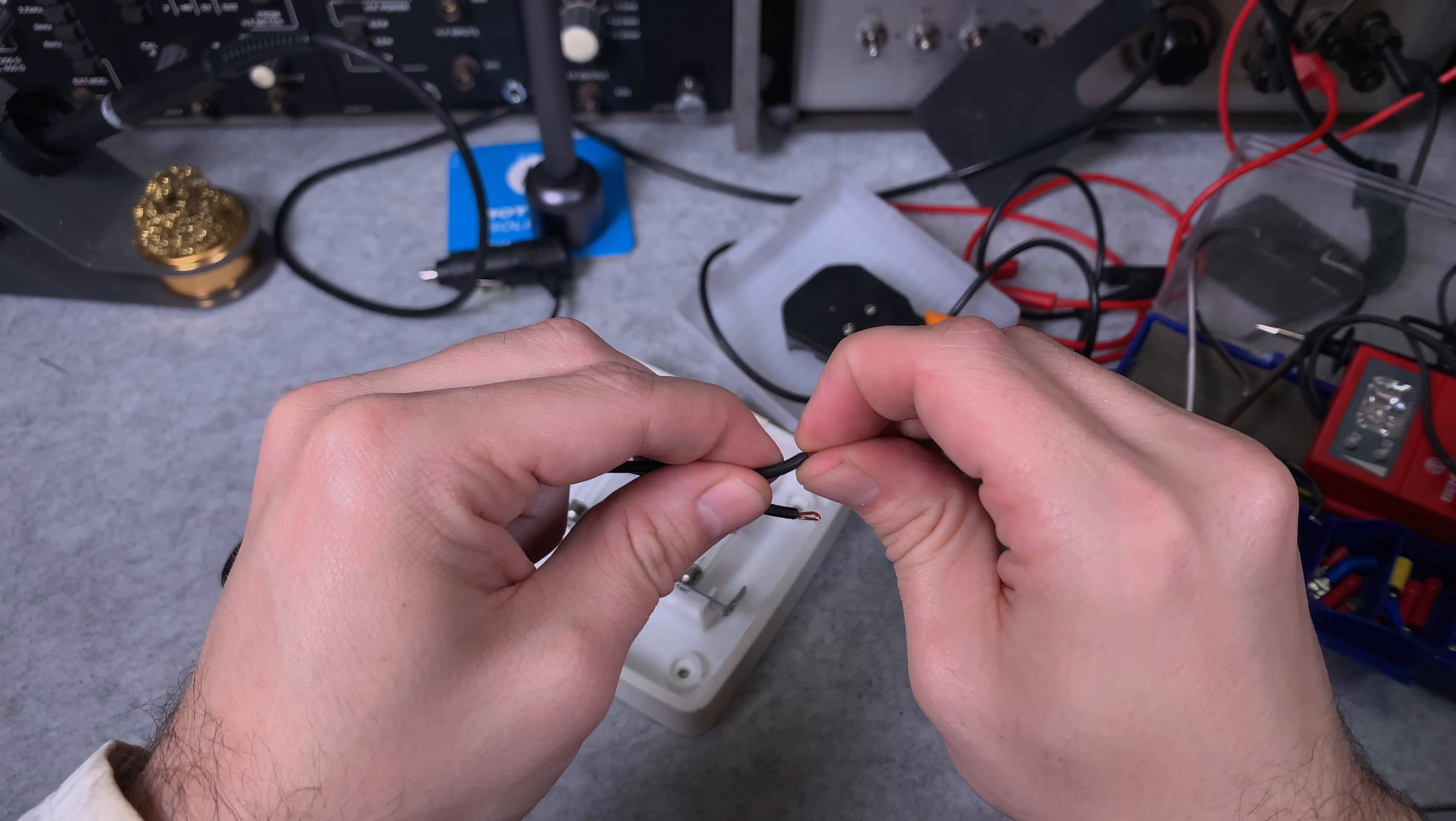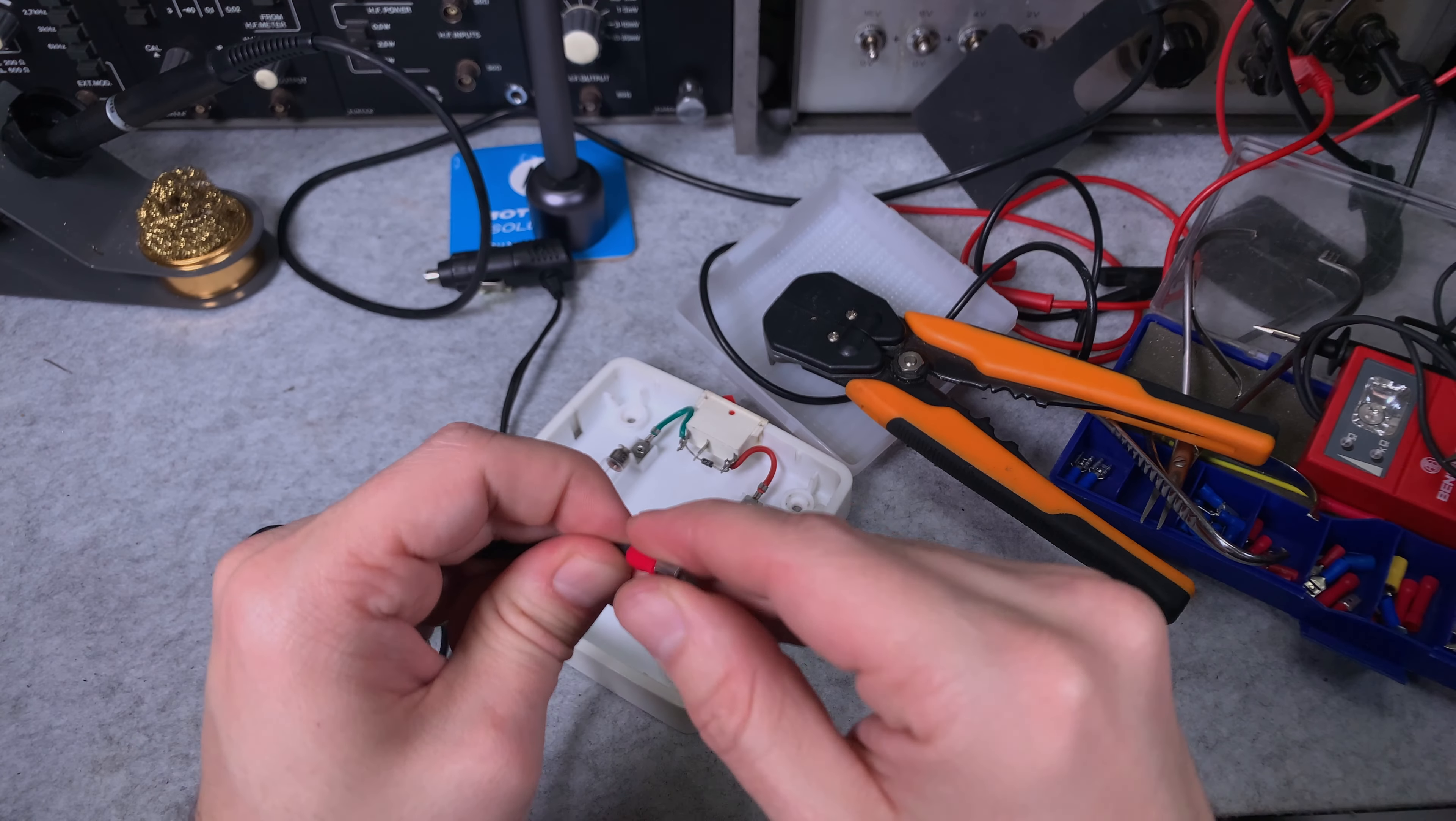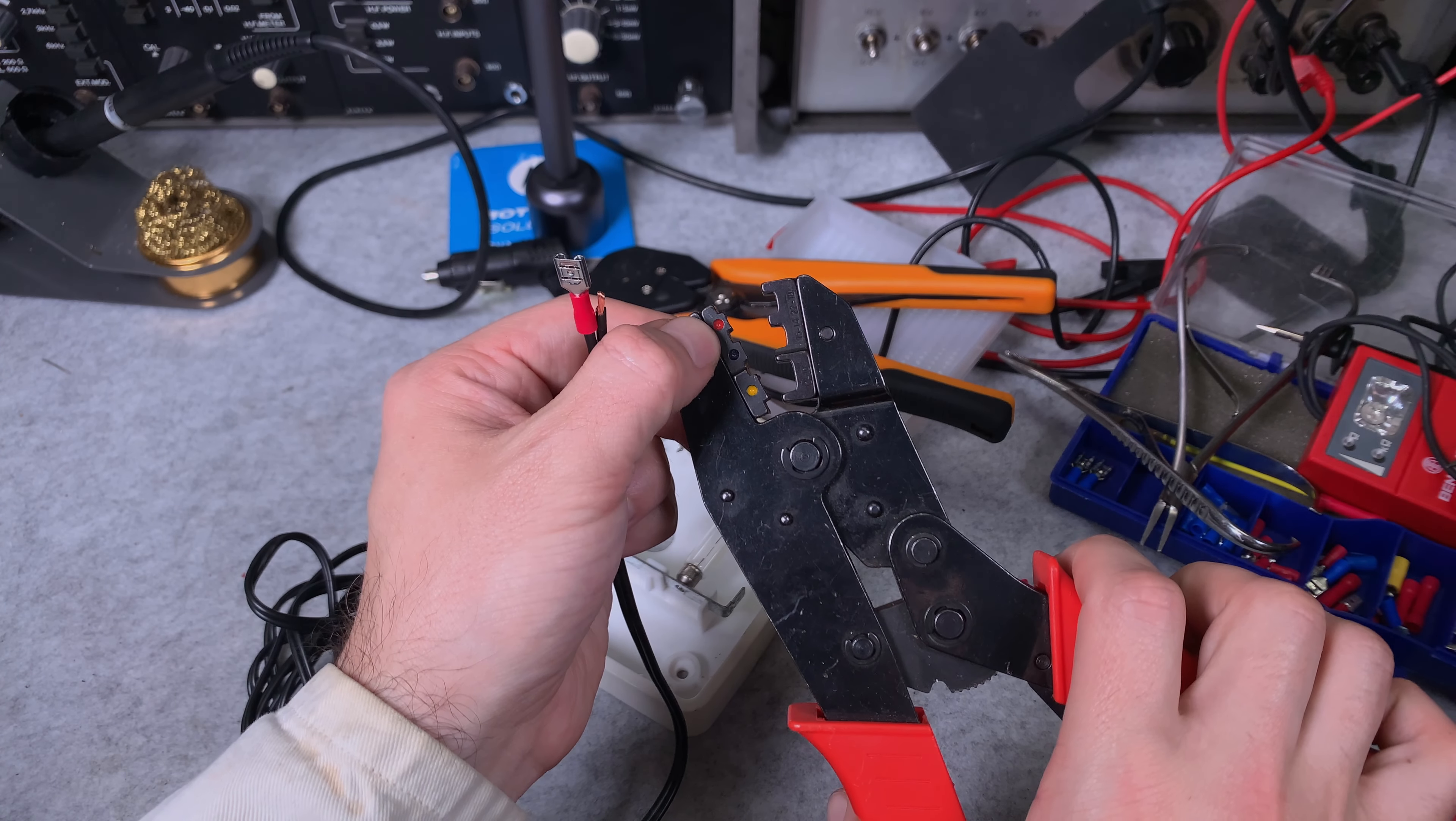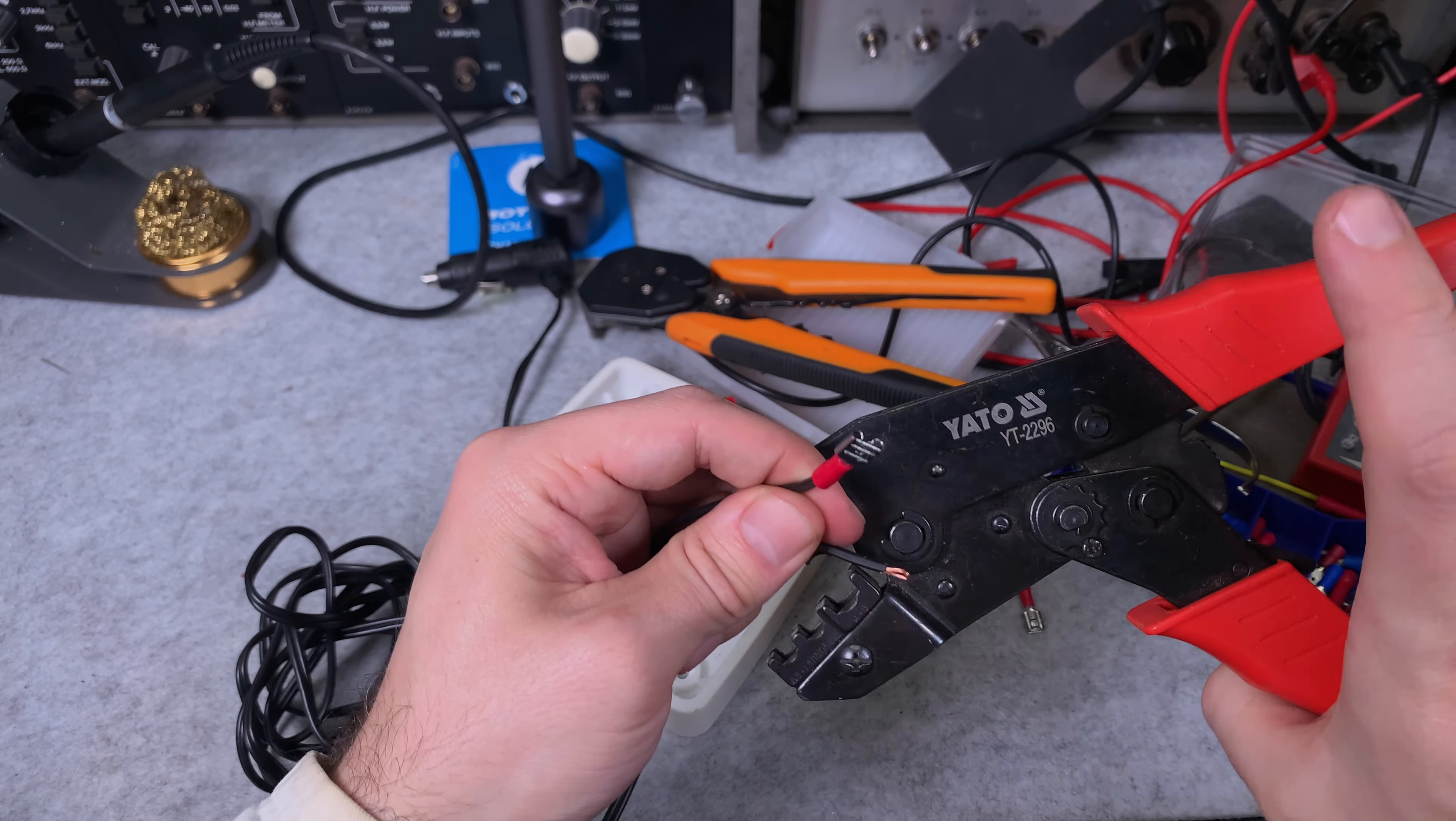So it gets more copper to create a better crimp, and I'm going to insert it. We are going to see if it nicely fits, and yes it does. Now we grab our crimper. We are going to follow the red color code, which is the smallest one.